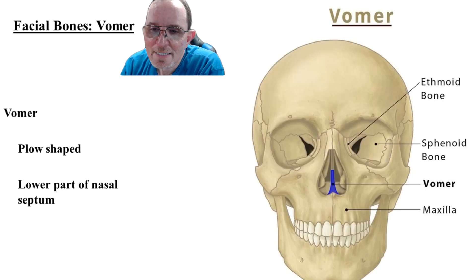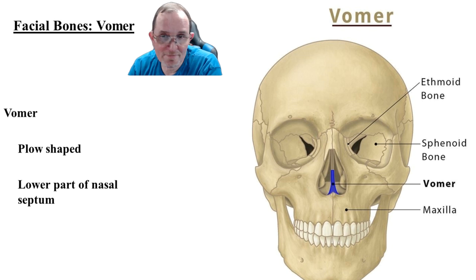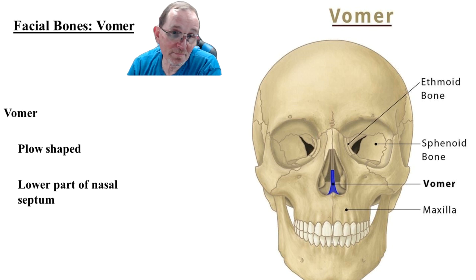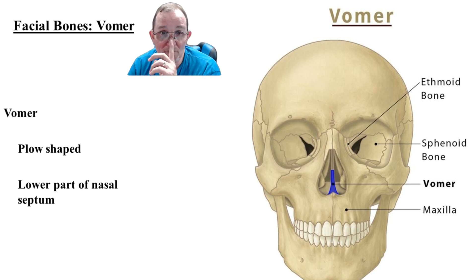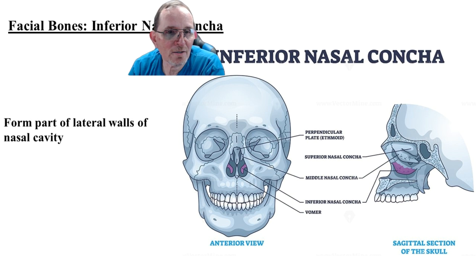The vomer — just above it is the perpendicular plate of the ethmoid bone, and below that is the vomer itself. The perpendicular plate goes straight up and down, but the vomer comes off at an angle — described as plow-shaped. It forms the lower part of the nasal septum, the separation between the nostrils. The inferior nasal conchae are pretty straightforward.